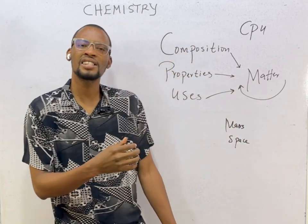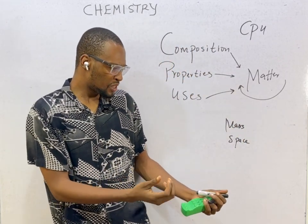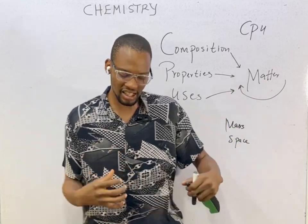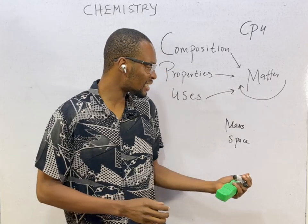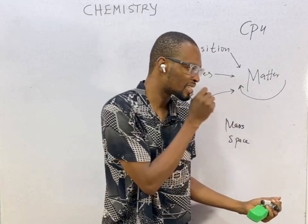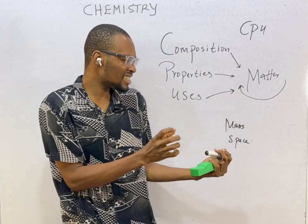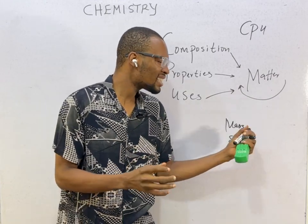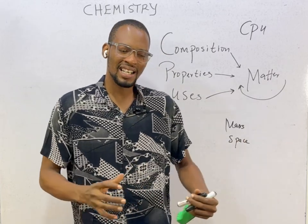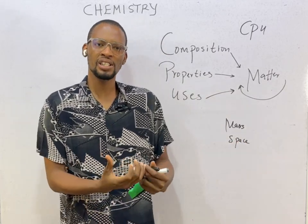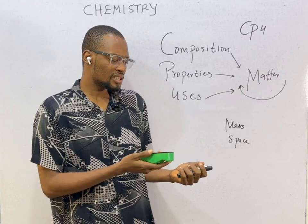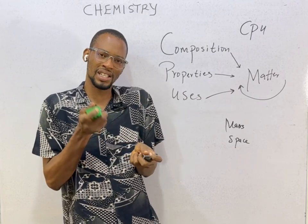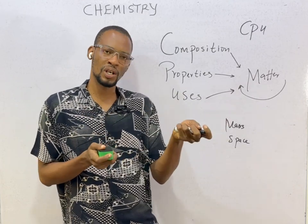Mass is a fundamental quantity, which means it does not depend on any other quantity — it can stand on its own. Mass is the quantity of material in an object or body. It is the quantity of matter or substance that a body possesses. If one object has a bigger mass than another, it means it contains more quantity of matter or substance.